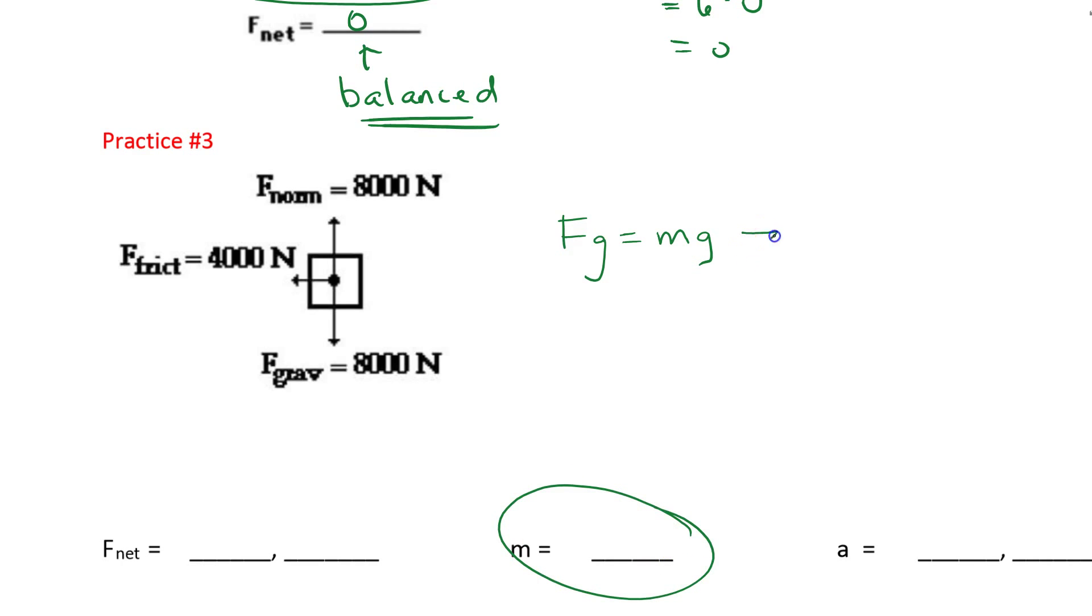So if I rearrange this formula, I can say mass is equal to the force of gravity divided by g, and you've done this before, so it's going to be 8,000 newtons divided by 10. So it's going to be 800 kilograms. There we go. So we know that this is 800 kilograms.